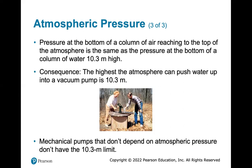Pressure at the bottom of a column of air reaching the top of the atmosphere equals the pressure at the bottom of a column of water 10.3 meters high. Consequently, the highest the atmosphere can push water up into a vacuum pump is 10.3 meters. If your well is deeper than 10.3 meters you'll have trouble. Mechanical pumps that don't rely on atmospheric pressure don't have this 10.3 meter limit.